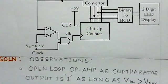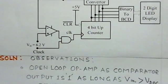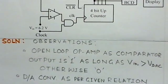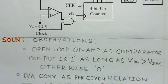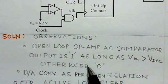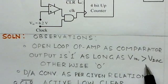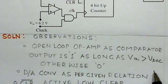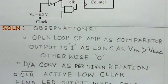So the observations which we have seen, they are listed here. Open loop op-amp is like a comparator. And output is 1 as long as VIN is greater than VDAC, otherwise it is 0. D to A conversion is given as per the relation. There is a relation by which the output voltage of D to A converter can be determined.